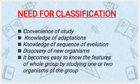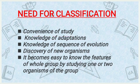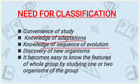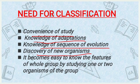The need for classification: first, convenience of study — since studying all organisms separately is impossible, we create categories so we only need to study the categories rather than each organism individually. Next is knowledge of adaptation — how living organisms, plants and animals adapt, which we come to know through classification. Knowledge of sequence of evolution is also gained this way. Discovery of new organisms — if we have divided categories, we can easily place any newly discovered organism based on its observable characters. It also becomes easy to know the features of a whole group by studying just one or two organisms of that group.